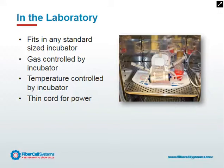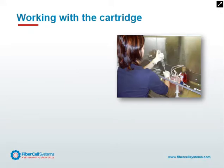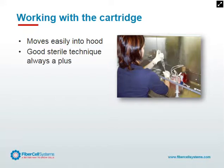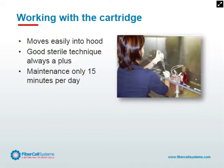It's very convenient to put inside the incubator and take out again. When working with the cartridge, we can pull it out of the Duet pump and move it into the hood. It's both the easiest and most difficult process to contaminate a cartridge. While it's outside of the hood, it's going to be sealed; when it's inside the hood, it's very important to utilize good sterile technique. Maintenance is only 15 minutes a day — we just measure the glucose and harvest our product. In this example, this young lady is not wearing a lab coat, so we want to be sure to follow good sterile technique whenever we're working with the cartridge.